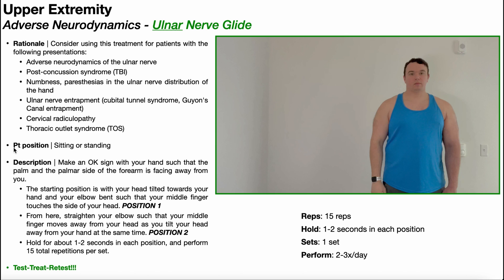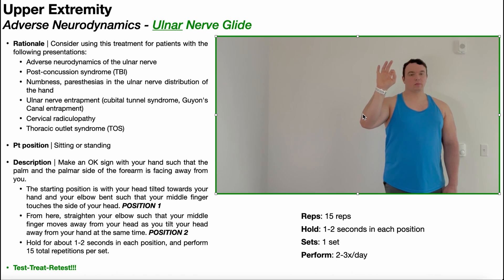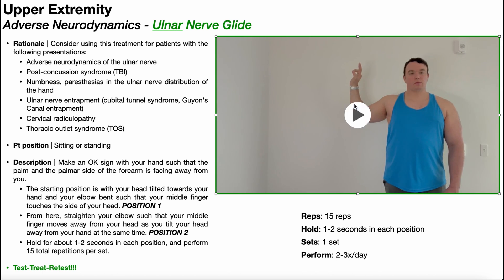To perform the ulnar nerve glide, the patient will be positioned in sitting or standing. You're going to make an okay sign with your hand such that your palm and palmar side of your forearm are facing away from you. Turn the hand away so the palm and palmar side of the forearm are facing away, over to the side. Now to get to the starting position — position one — tilt your head towards your hand and bend your elbow such that your middle finger touches the side of your head.